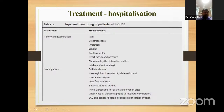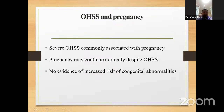For inpatient monitoring with OHSS: in history, check for pain, breathlessness, hydration, weight, and cardiovascular symptoms. On examination: heart rate, blood pressure, abdominal girth, distension, and intake/output chart. Investigations include full blood count — hemoglobin, hematocrit, WBC count — urea, electrolytes, LFT, baseline clotting studies, pelvic ultrasound for ovarian size, chest X-ray or ultrasound if respiratory symptoms are present, and ECG/echocardiogram if pericardial effusion is suspected.